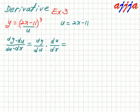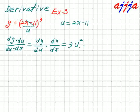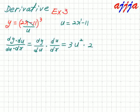The left-hand side is actually y. Now we treat this one like u to the third power. So dy over du equals 3u to the second power. Then du over dx — we take the derivative of 2x minus 11, which gives us 2.